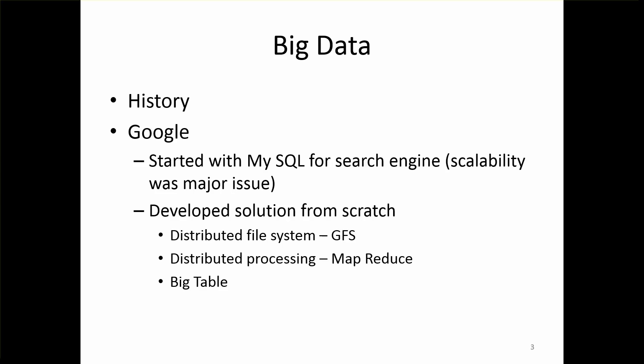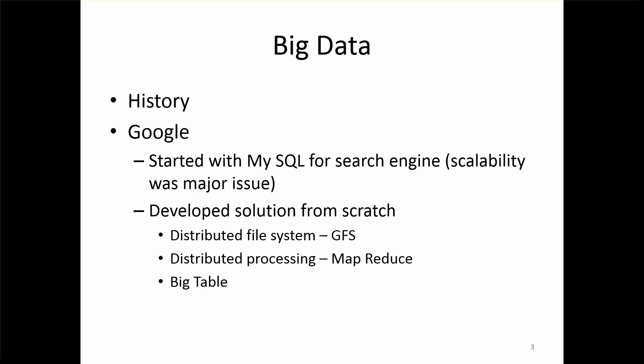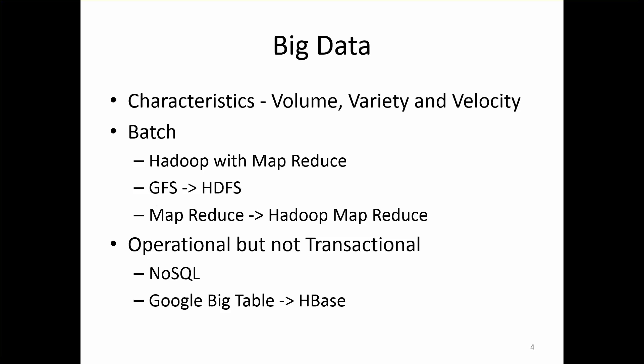That's how Google solved the problem of scalability by developing GFS, MapReduce, and Bigtable to give a more robust and scalable search engine. And the rest is history. After Google achieved their success, they published three white papers — on all three components: GFS, MapReduce, and Bigtable. I will come back to what happened after publishing the white papers after speaking about the characteristics of Big Data. Big Data characteristics are 3V, which is very famous when we talk about Big Data. 3V stands for Volume, Variety, and Velocity.